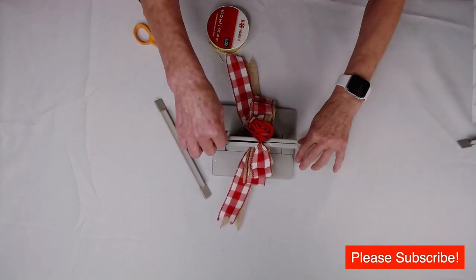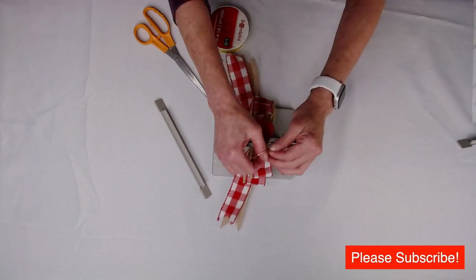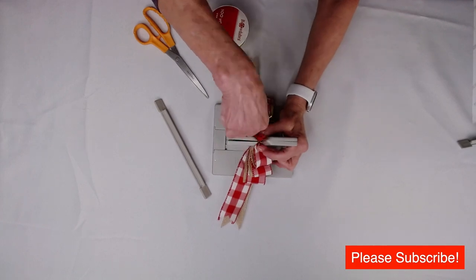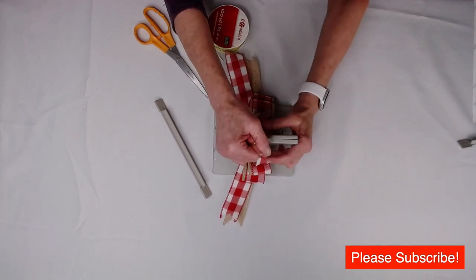Then I'm going to take the ends, bring them up here. Now I have a slipknot because I folded it in half and I'm just going to pull it tight while it's still in the Bowdabra.